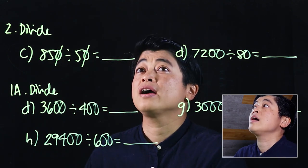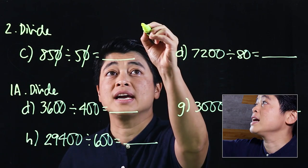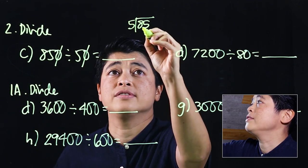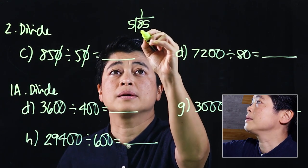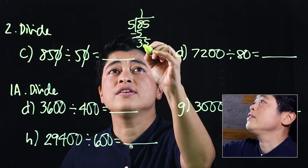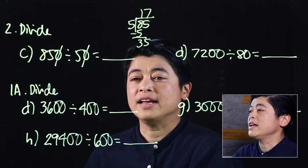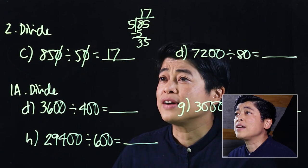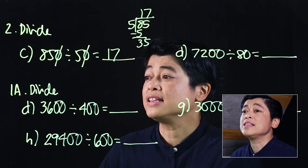85 divided by 5: 8 divided by 5 is 1, multiply that's 5, subtract that's 3. Bring down the 5, that's 35, which means that's 7. So 850 divided by 50 must be 17.